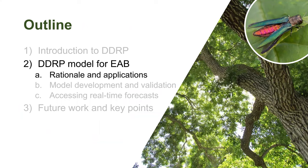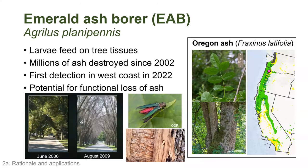Now I'll talk about the rationale and applications of our DDRP model for emerald ash borer. Emerald ash borer, Agrilus planipennis, is a very small, shiny green beetle native to Asia, and has been in the United States since at least 2002, where it was first detected in Michigan. The larvae feed at the interface of the phloem and xylem of ash trees, cutting off food and water movement to the canopy, killing the tree within just a few years. The insect has destroyed millions of ash trees; up to 99% of all ash trees are typically killed within 8 to 10 years once the beetle arrives.